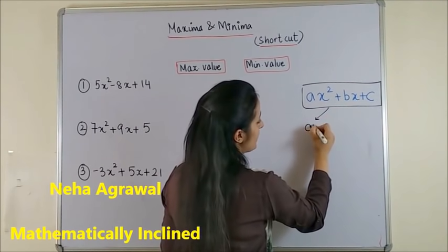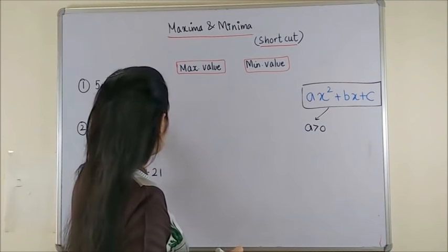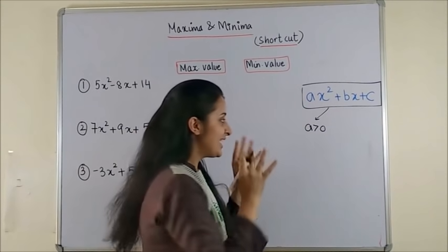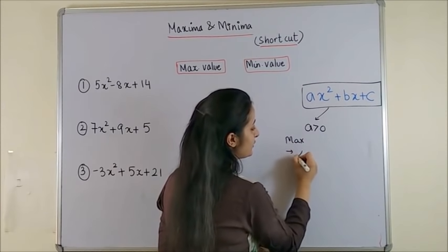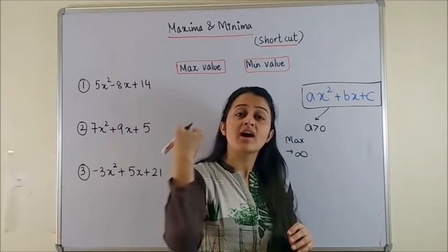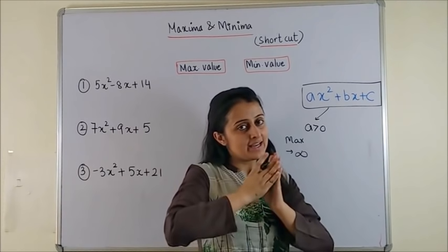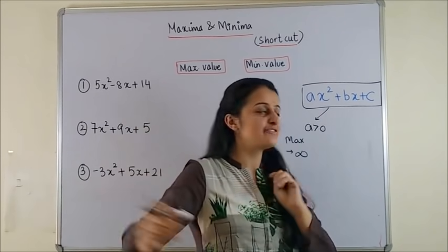Either your A is positive. So as was the case in the previous two questions, in this case your maximum value would always tend towards infinity. Because the higher the value of X is, it keeps approaching infinity.